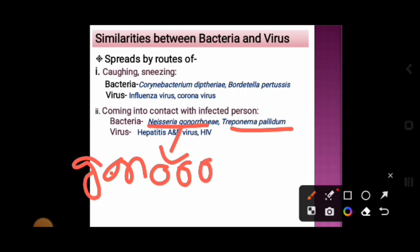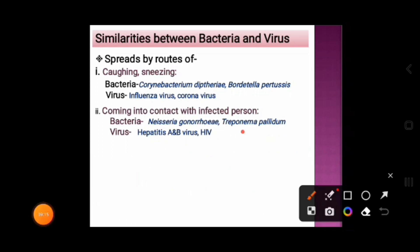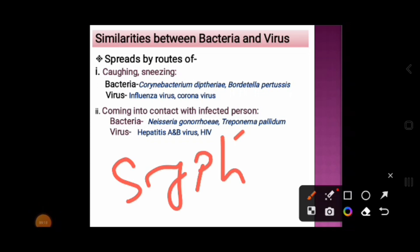Gonorrhea is spelled g-o-n-o-r-r-h-o-e-a — again, if you omit the 'e' from the species name you get the disease name. Another bacterium, Treponema pallidum, causes the disease syphilis.